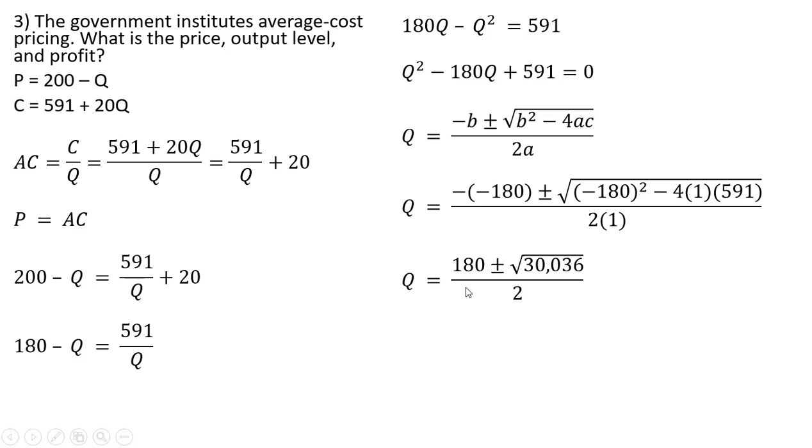Simplifying further, we get this result. Simplifying some more, Q equals 176.65 or Q equals 3.35. We're going to ignore this.